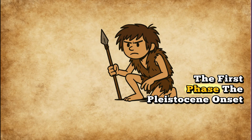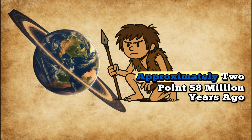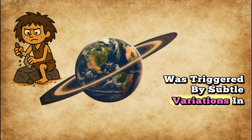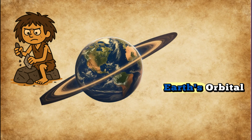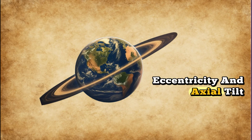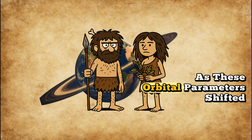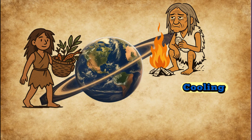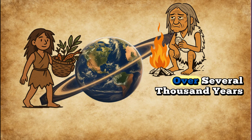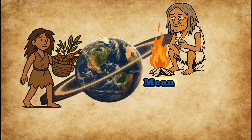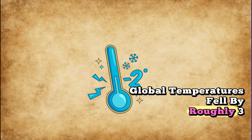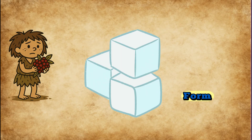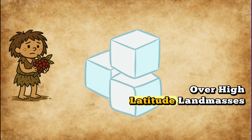The first phase, the Pleistocene onset approximately 2.58 million years ago, was triggered by subtle variations in Earth's orbital eccentricity and axial tilt. As these orbital parameters shifted, the planet's heat balance tipped toward cooling. Over several thousand years, mean global temperatures fell by roughly 3 to 4 degrees Celsius, allowing massive ice sheets to form over high-latitude landmasses.